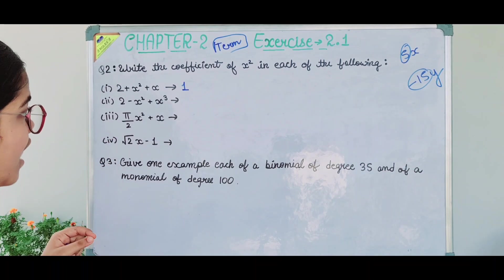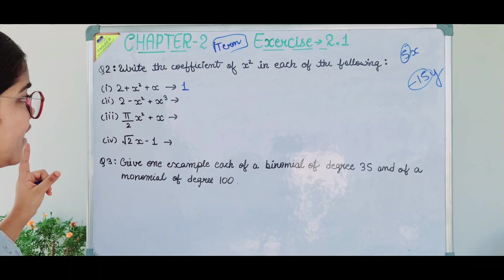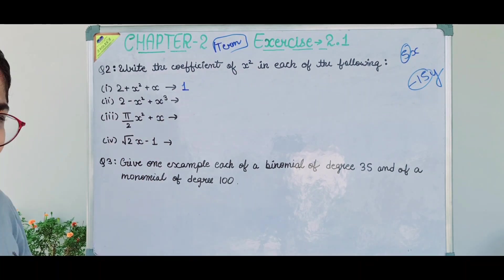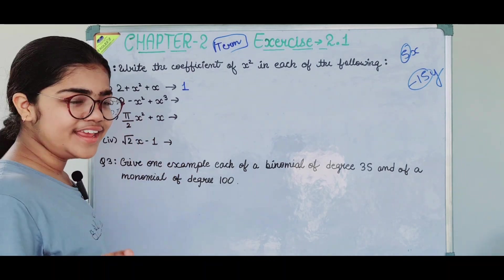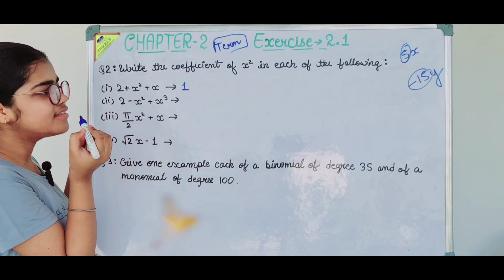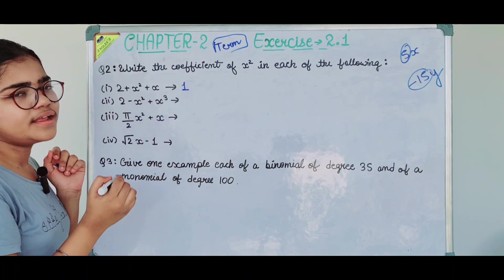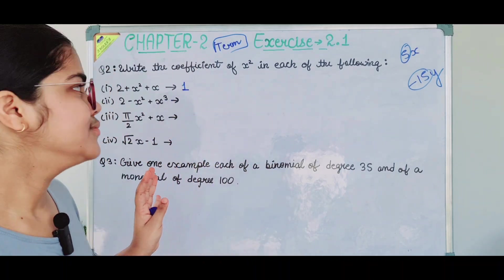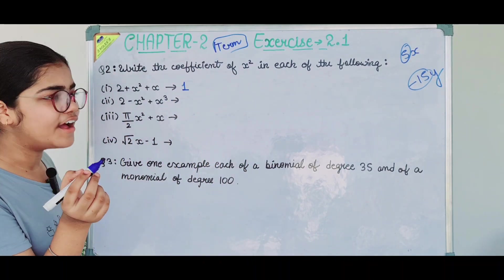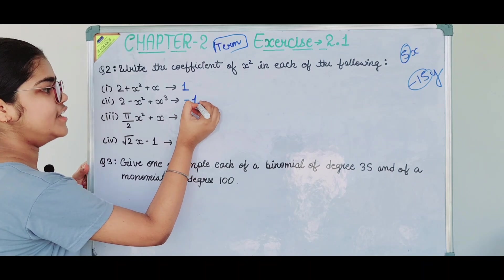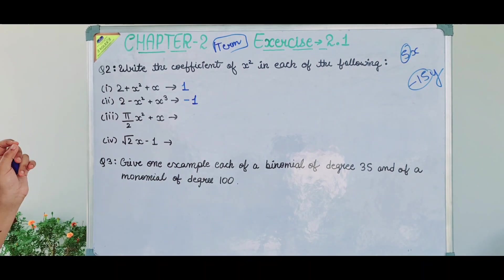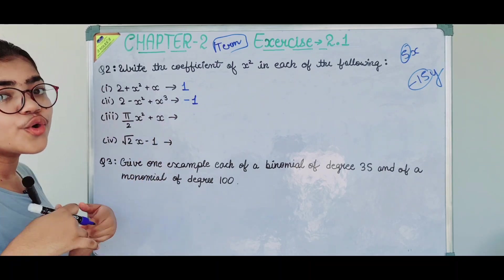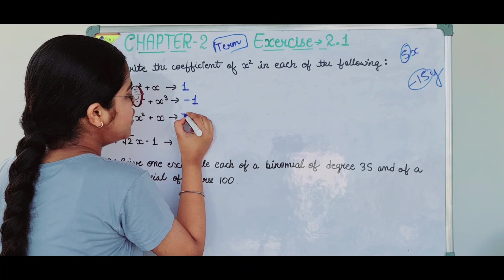The second part is 2 − x² + x³. Where is x²? There is a minus sign before it. So we will not write 1 — because the sign is minus, we write minus 1. The third part is π/2·x² + x. So the coefficient of x² here is π/2.